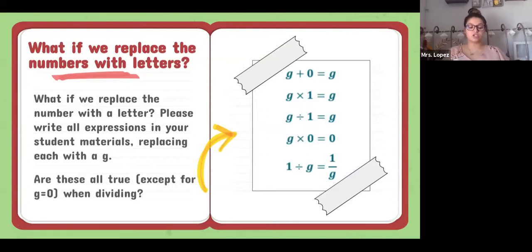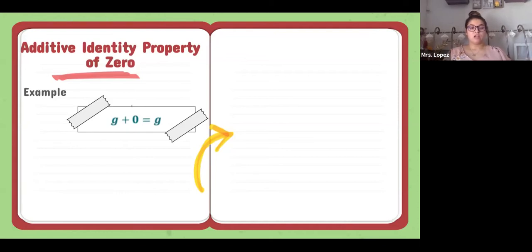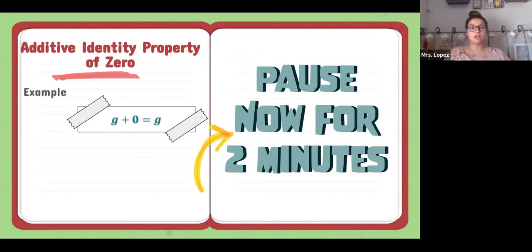This takes us into our properties. Our first property is the additive identity property of zero: when a number is added to zero, the number doesn't change. The value of G does not change when zero is added to G. I want you to try some numbers out — for example, if G is two, then two plus zero is two. If that's correct, keep going and try another number. Pause the video for two minutes to test different values.